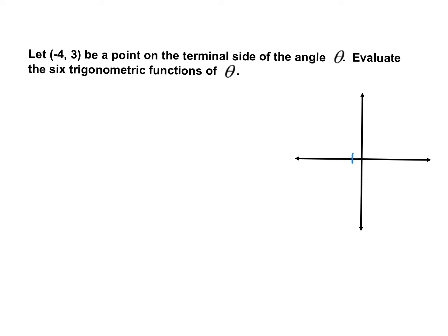We're going to go to x is negative 4, y is positive 3, and plot to that location — that's where our terminal side of our angle is going to be. We'll then draw a triangle and find all of the key components. Here is my initial side, and then it goes all the way around to my terminal side, ending at the coordinate point x is negative 4, y is 3.